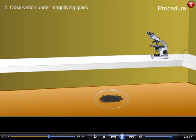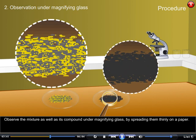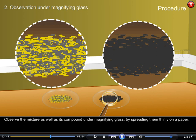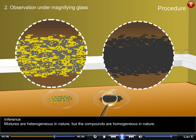2. Observation under magnifying glass: Observe the mixture as well as its compound under magnifying glass by spreading them thinly on a paper. Observations: In case of mixture, the grey particles of iron can be seen clearly in yellow particles of sulphur and they are not uniform throughout. In case of the compound, uniformly grey particles are seen. Inference: Mixtures are heterogeneous in nature, but the compounds are homogeneous in nature.